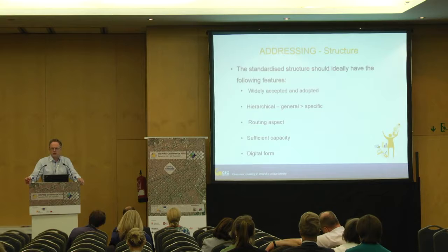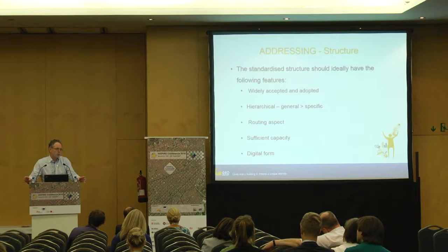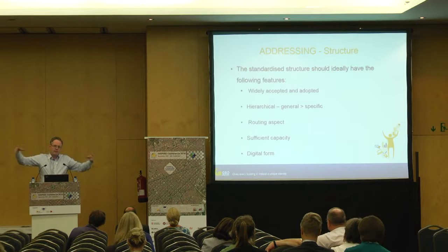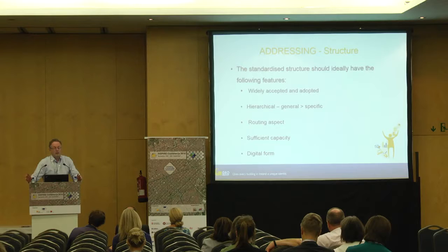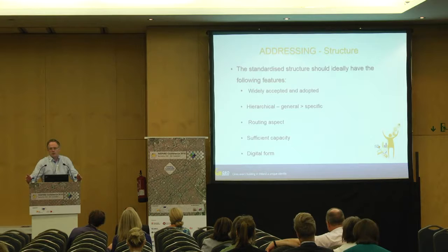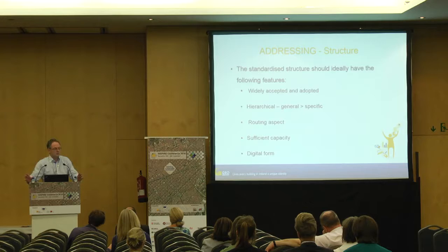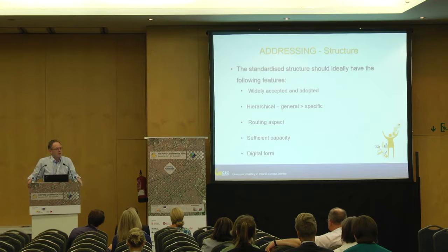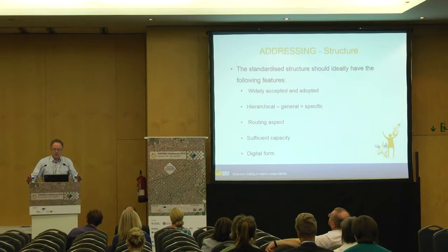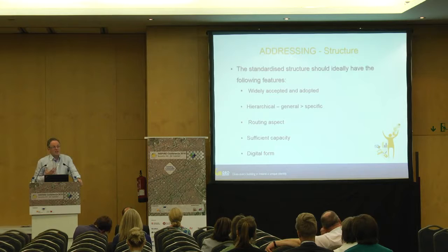An address structure must move from the general to a specific point, have a routing aspect to lead you somewhere, and have sufficient capacity to grow over time — allowing for infill between buildings. An example of a poor addressing structure: the internet's IPv4 ran out of addresses, requiring IPv6 with billions of addresses, but IPv6 is now wrapped in IPv4 for transit. That was created by very technical people who forgot to build in sufficient capacity. In today's world, we need addresses to be usable in a digital way.